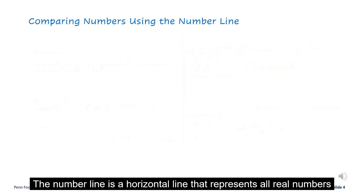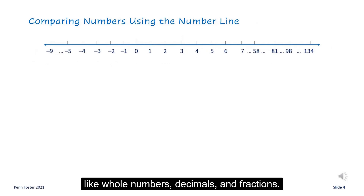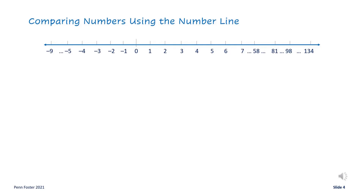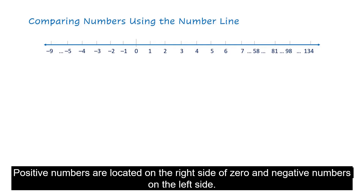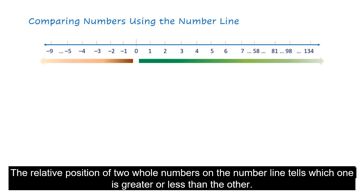The number line is a horizontal line that represents all real numbers — like whole numbers, decimals, and fractions. For this lesson, whole numbers will be the focus. Positive numbers are located on the right side of zero and negative numbers on the left side. Whole numbers can be compared using the number line.